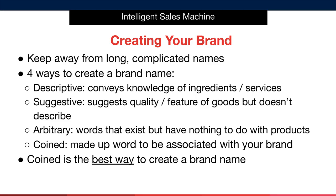Next, we have arbitrary marks, which are words that exist but have nothing to do with the products at all. Good examples are Google, Amazon, or Subway. The problem with these types of brand names is that they're difficult to come up with.